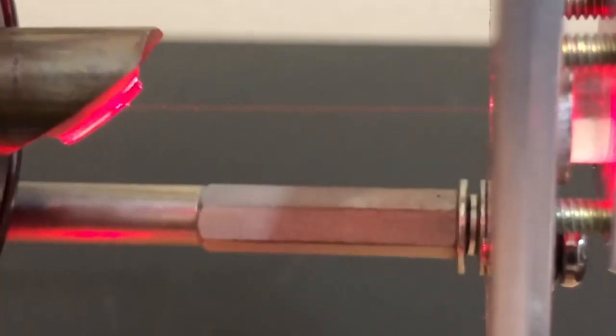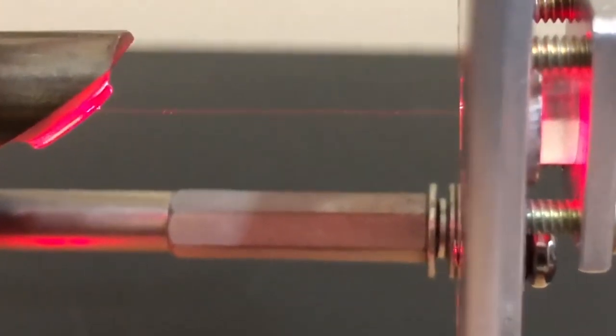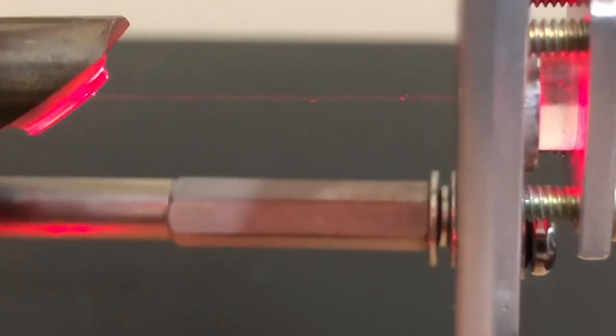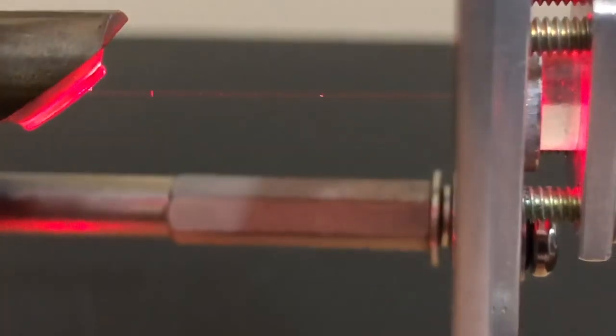The windows are positioned at an angle called the Brewster's angle to minimize reflective losses. The resulting arrangement enables experimentation by providing access to the optical cavity and user choice of mirrors.